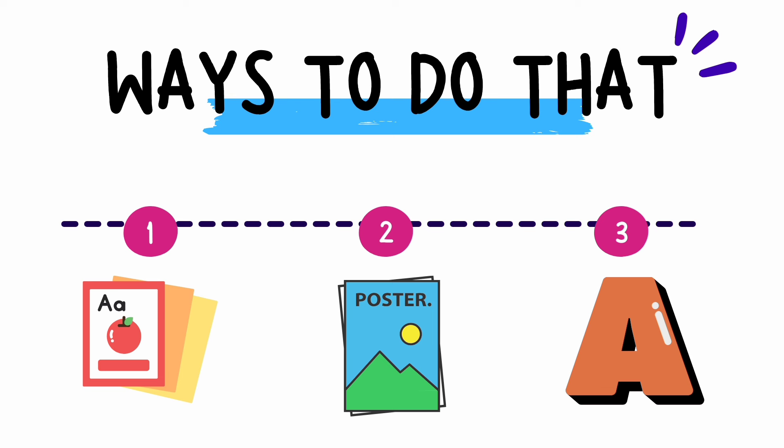The three methods are: flashcards, posters, and letter cutouts. For ages two to three, we do not aim at any writing skills — we only teach letters through visual representation. The child should be able to see the letter A and say it is letter A, even without knowing how to write it. Flashcards, posters in their room, and letter cutouts are best for this visual learning.